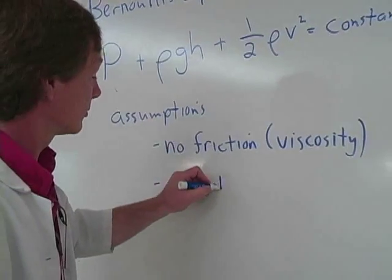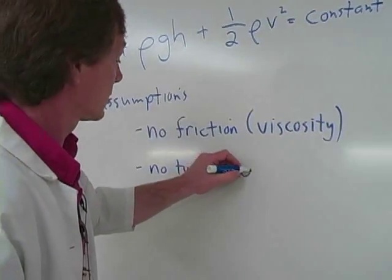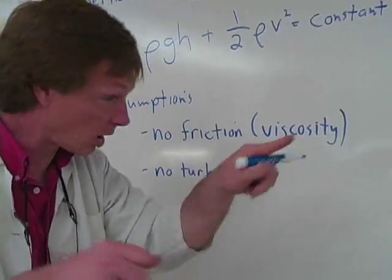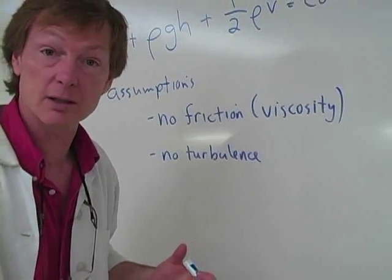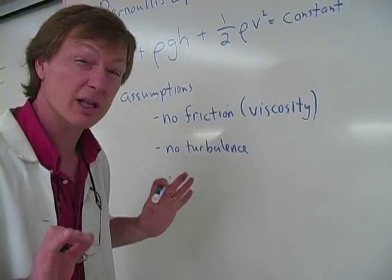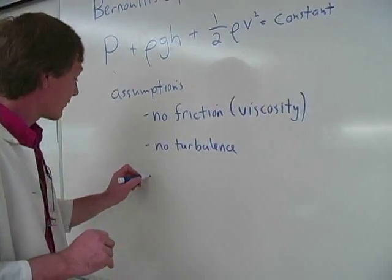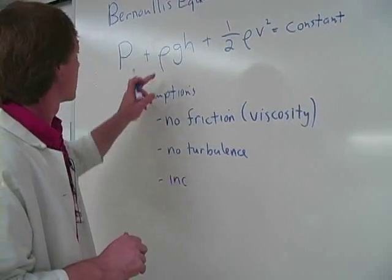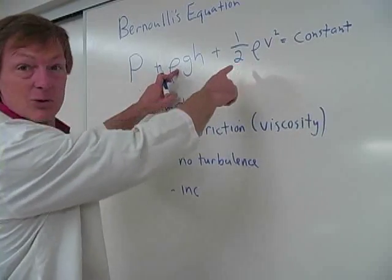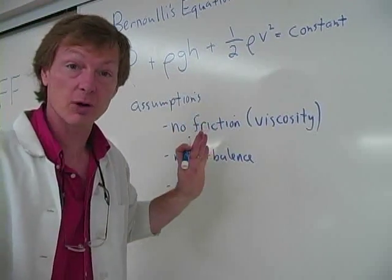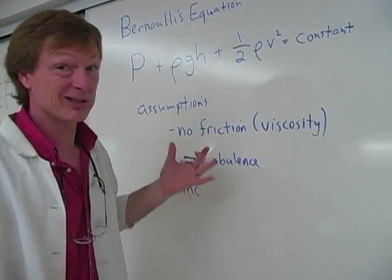No turbulence. If I start making the energy go in all kinds of different directions, I've wasted it. So I'm going to assume just laminar flow for this. Finally, I'm going to assume that the density terms don't change. I'm going to assume incompressible flow, where the density won't change. It makes it easier to solve.